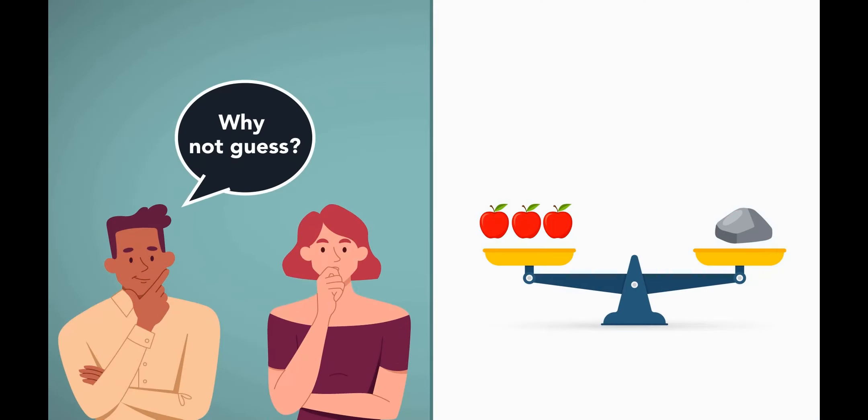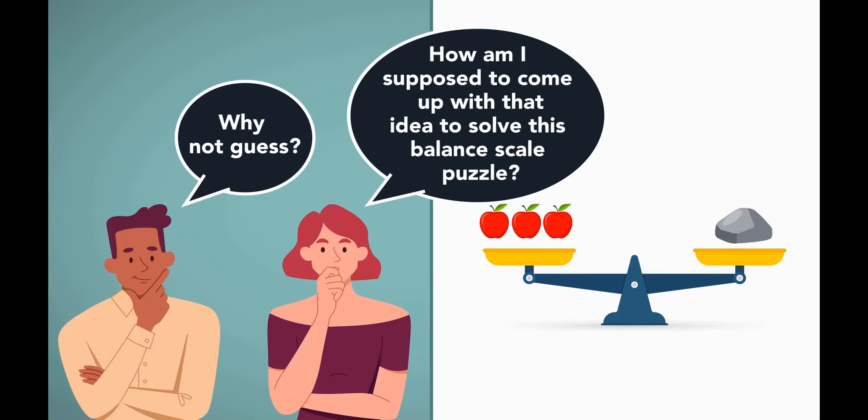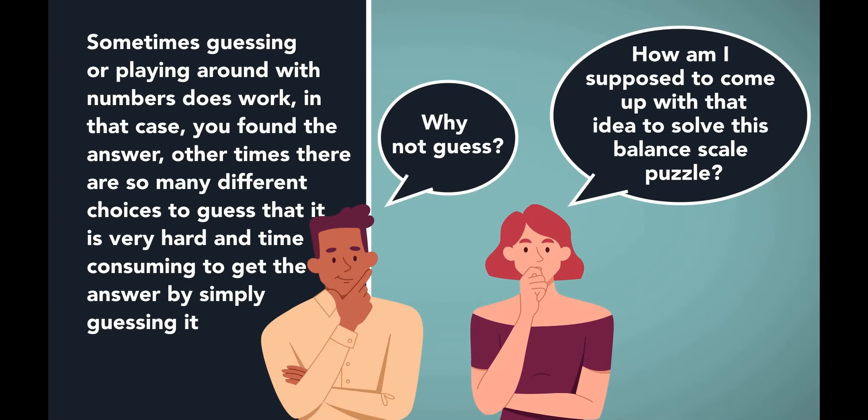First is, why not guess? Why not try integers, say one, two, three, and four, and so forth, for the weight of the apple and see if it works? After we see that it doesn't, then we can try using fractions and guess some of them until we find one. The other question is, how am I supposed to come up with that idea to solve this balance scale puzzle? There's no way I would have thought of doing that independently.